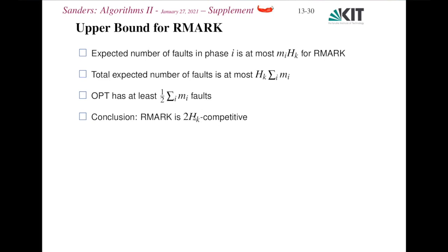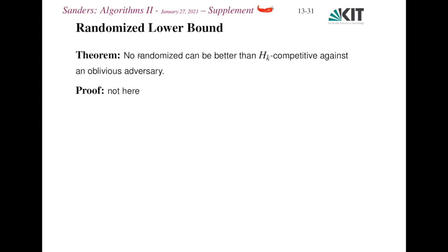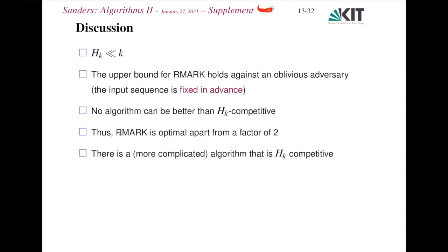So the randomized marking algorithm is 2H_k-competitive — much better than the k-competitiveness of deterministic algorithms. And it's almost optimal for randomized algorithms, since there are also lower bounds showing no randomized algorithm can be better than H_k-competitive against an oblivious adversary. The randomized marking algorithm is therefore an optimal randomized paging algorithm, apart from a factor of two. There is actually a more complicated algorithm that achieves H_k-competitiveness exactly.